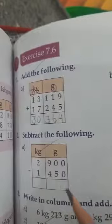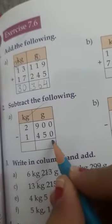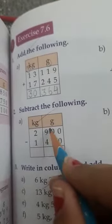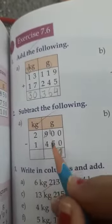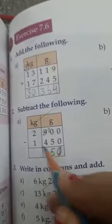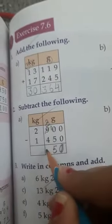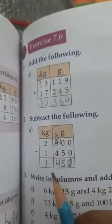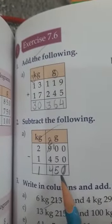So now do the subtraction: 0 minus 0 equals 0. Zero is smaller than 5, so take one borrow from that side, total 10. 10 minus 5 equals 5. There are left 8, 8 minus 4 equals 4. 2 minus 1 equals 1. So the answer is 1 kilogram 450 gram. Clear students? Other sums, do by yourself.